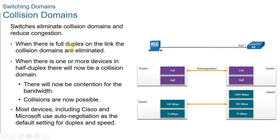If an Ethernet switch port is operating in half-duplex, each segment is in its own collision domain. There are no collision domains when switch ports are operating in full-duplex — when there is full-duplex on the link, the collision domains are eliminated. By default, Ethernet switch ports will auto-negotiate full-duplex when the adjacent device can also operate in full-duplex. When one or more devices are in half-duplex, there will be a collision domain, and collisions are now possible.